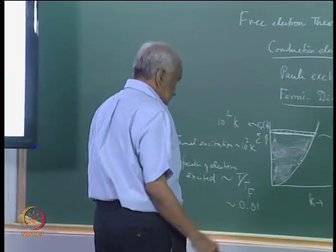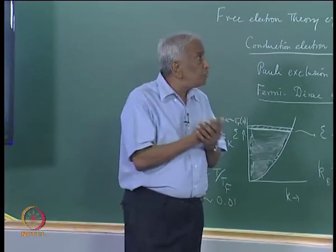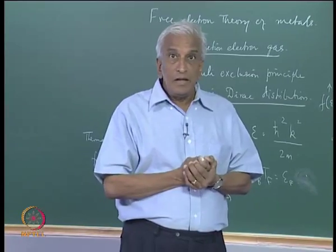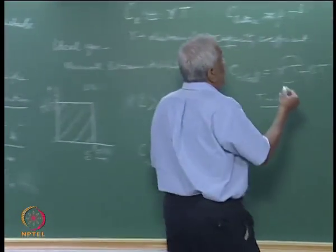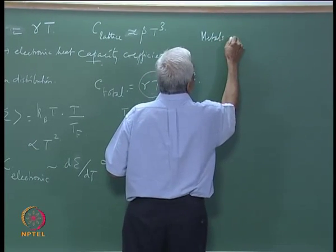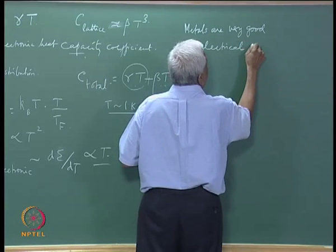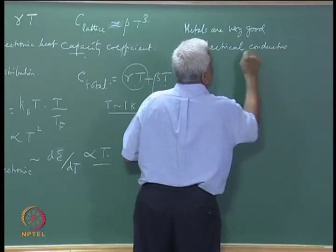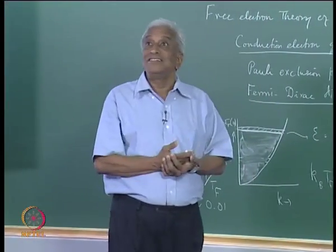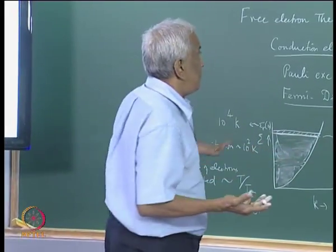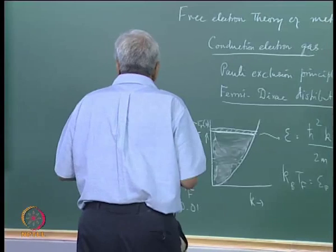That is the important concept developed last time. Now we move on to discuss how the picture of the conduction electron gas in a metal leads to the well-known behavior that metals are very good electrical conductors. We would like to understand why metals like silver, gold, or copper are very good conductors of electricity within the framework of the free electron gas picture.